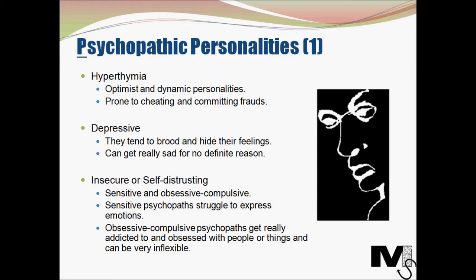The next type is insecure or self-distrusting, and there are two sub-types here: sensitive and obsessive-compulsive. Sensitive psychopaths struggle to express their emotions, and obsessive-compulsive psychopaths can get really addicted to and obsessed with people or things and can be extremely inflexible. Snyder observed that insecure psychopaths tend to have a strong guilty conscience, blaming everything on themselves, so the probability of such psychopaths committing crimes is relatively low.